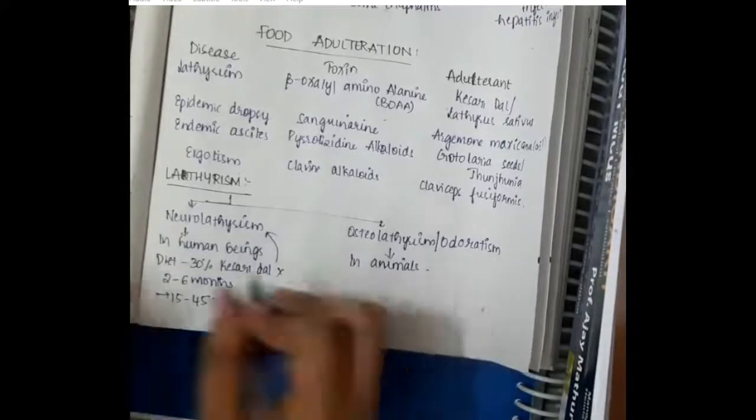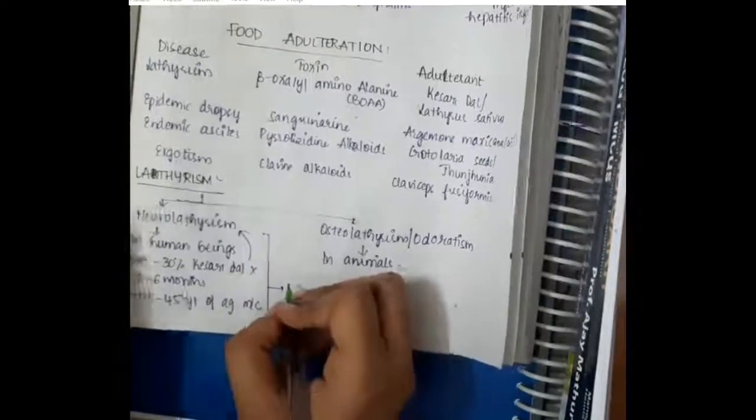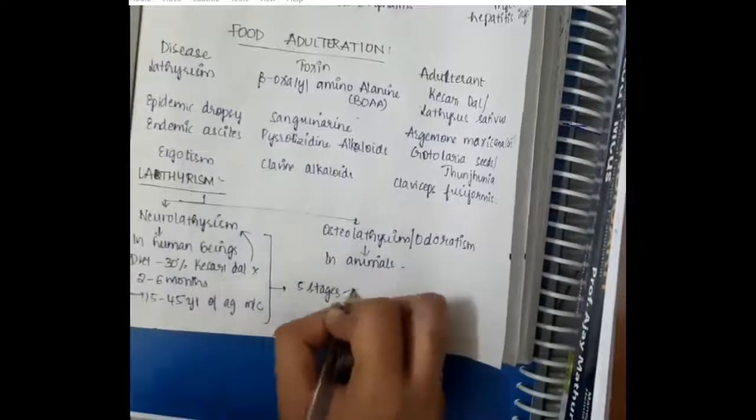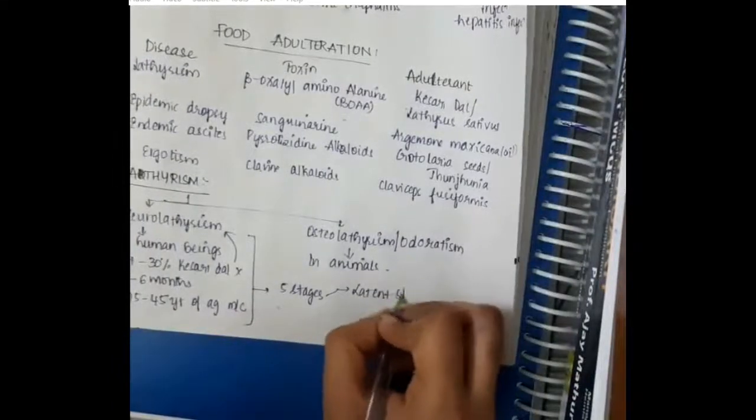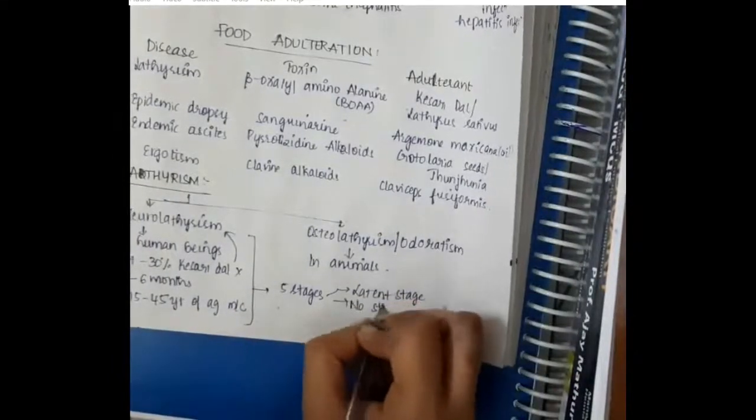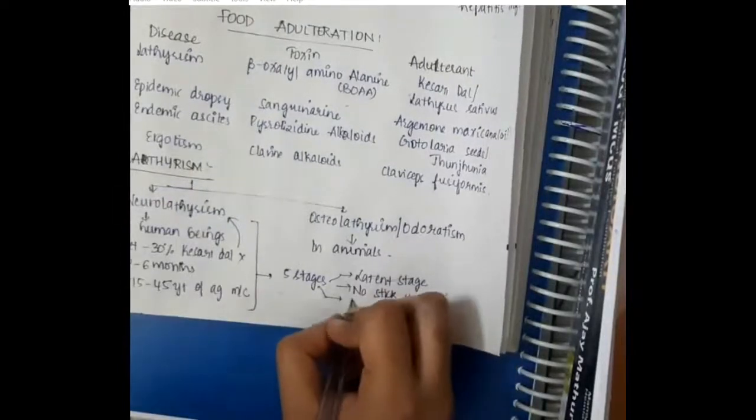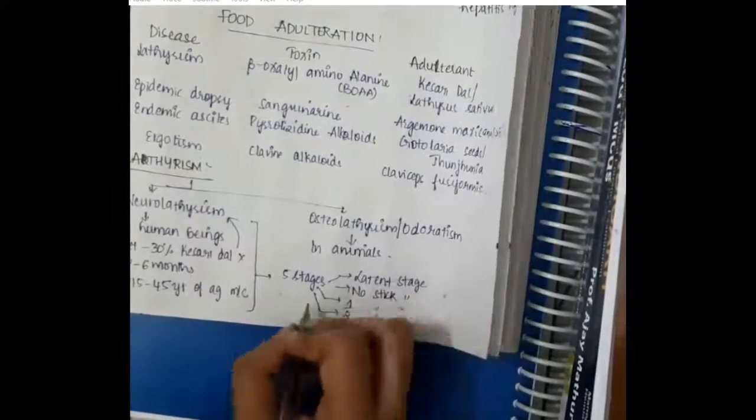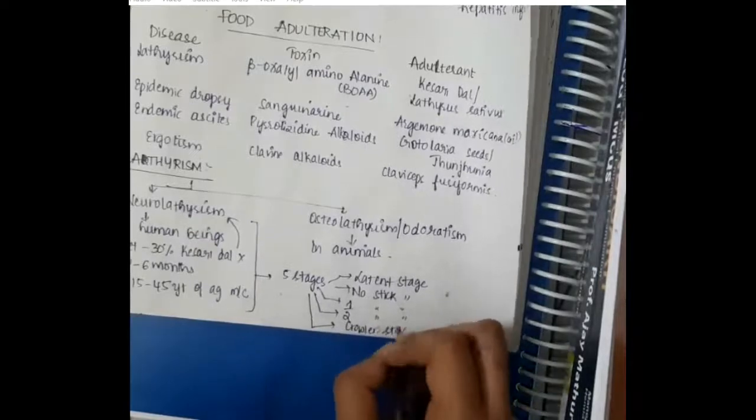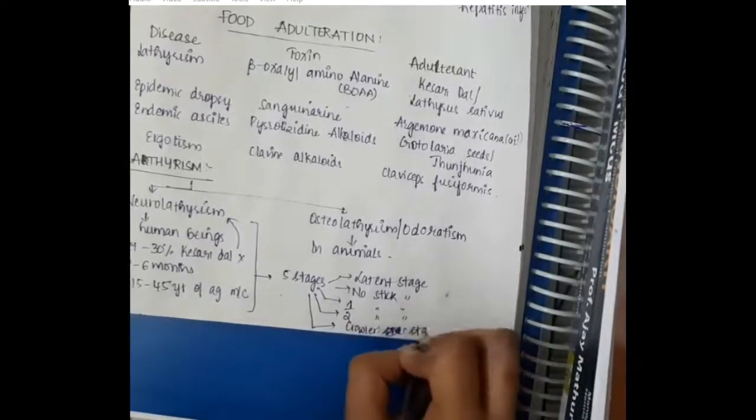It is most common in 15-45 years of age and this neurolatirism is in 5 stages: latent stage, no-stick stage, one-stick stage, two-stick stage, and crawler stage. That means here there is problem in standing on straight leg in neurolatirism.